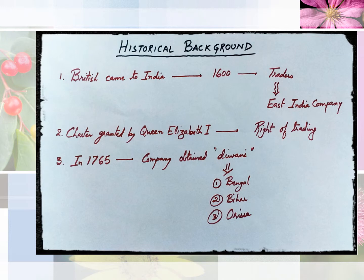Now we will see how today's constitution, which we are following, was formed. Let's begin in jotted form in chronological order. We will see from the British period how the British came to India and what followed.